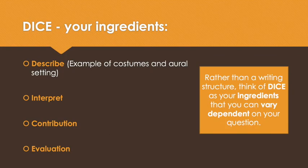Instead of using the KEC structure that we use for six mark questions, we are going to use DICE for 12 mark questions. Rather than having a writing structure, think of DICE as your ingredients that you can vary depending on the question that you were given. Your ingredients are: D for describe, I for interpret, C for contribution, and E for evaluation.